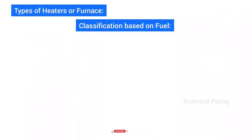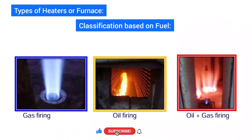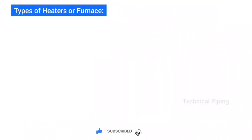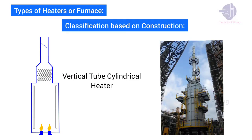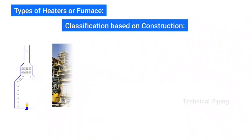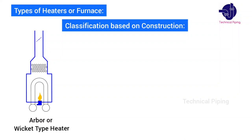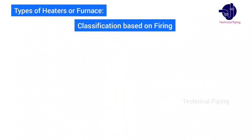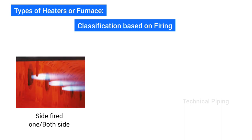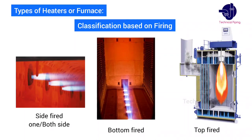Heaters are also classified based on fuel: gas firing, oil firing, and combination firing. They are further classified based on construction: side fired — one side or both sides — bottom fired, and top fired. These are the types of heaters used in major industries based on their requirements.